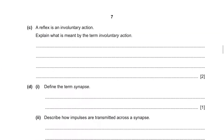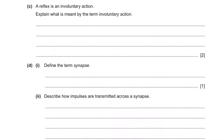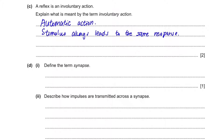Part C: a reflex is an involuntary action — explain what is meant by this term. When there is an involuntary action, your body acts without thinking and always acts in the same way. It is an automatic action where the stimulus always leads to the same response. Part D: define the term synapse. A synapse is a junction between two neurons — junction and neurons are the key words to always include.